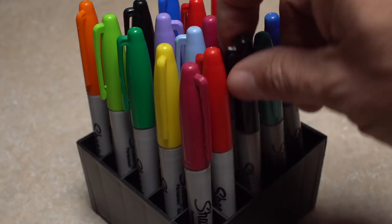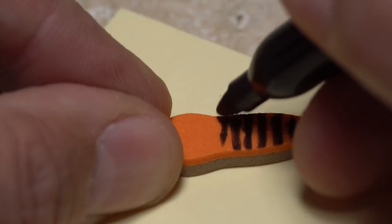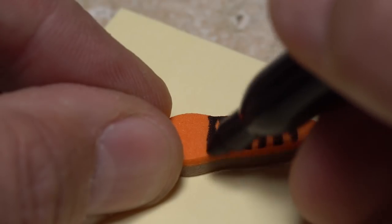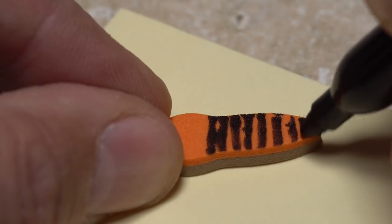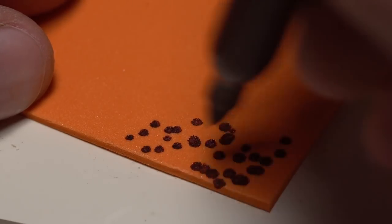Foam also takes permanent marker exceptionally well. It's fine to simply draw on it and maybe produce the look of segmentation like I'm doing here, but as with cutting, I've found that creating a pattern on the sheet prior to cut out makes the end result look that much more natural.